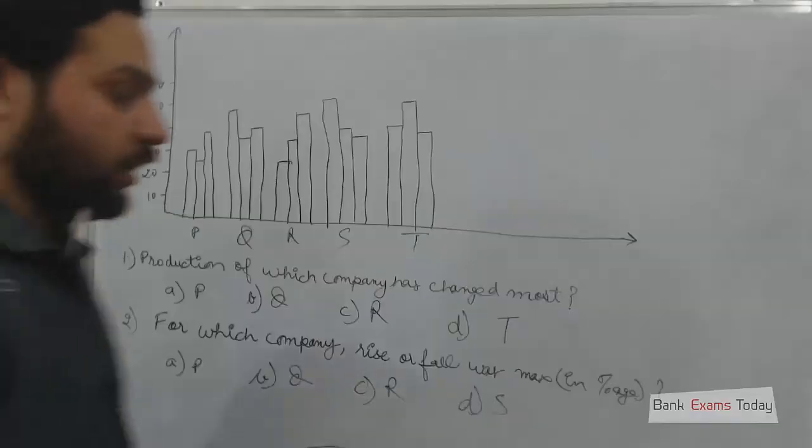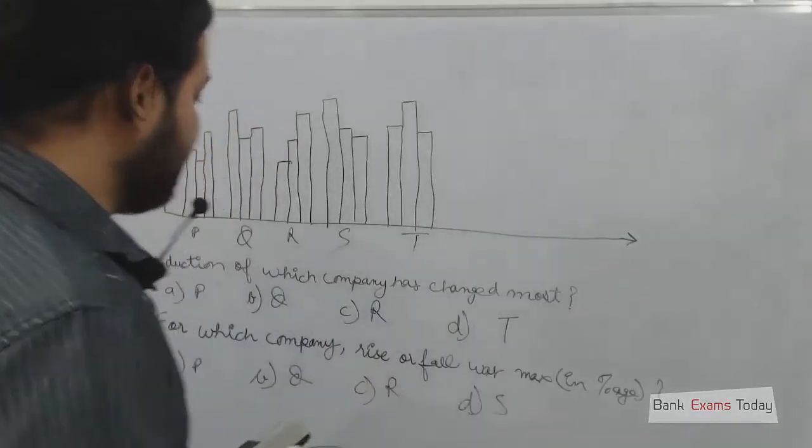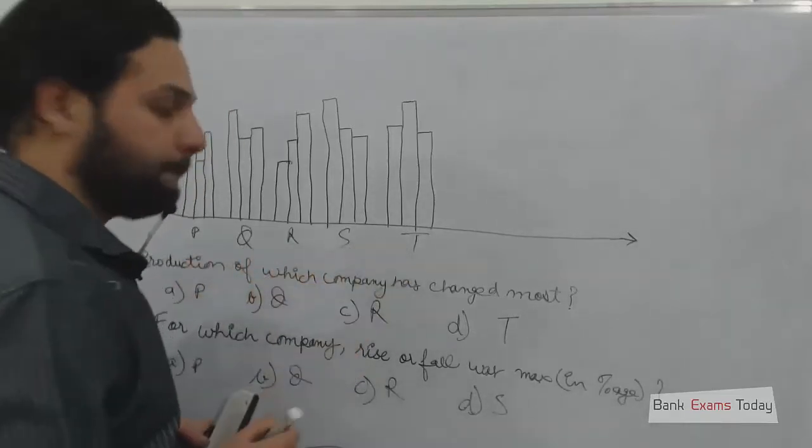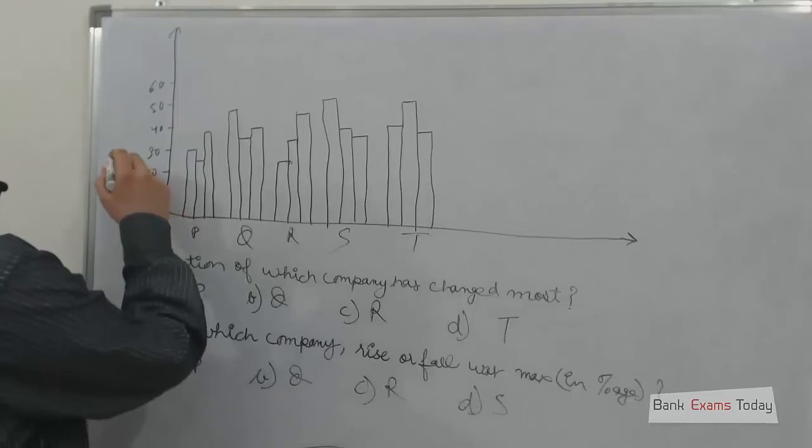So let's do a very simple question. Let's do a very simple example. There are 5 companies: P, Q, R, S, and T. This is the production of fertilizers in tons.